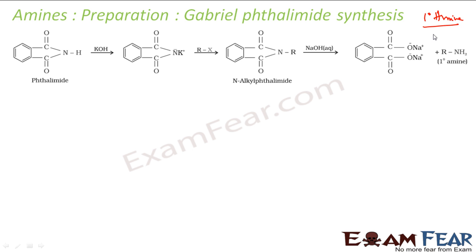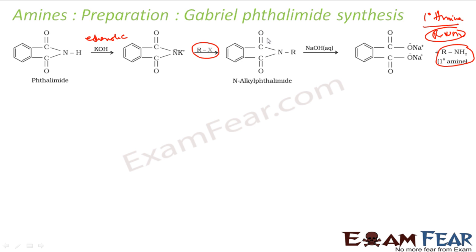In Gabriel phthalimide synthesis, we take phthalimide and treat it with ethanolic KOH to get the potassium salt of phthalimide. We then heat this with RX — an alkyl halide — to get the N-alkyl phthalimide. Finally, hydrolysis with water or NaOH gives RNH₂, which is the primary amine.